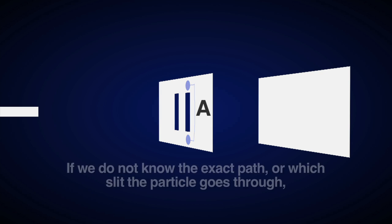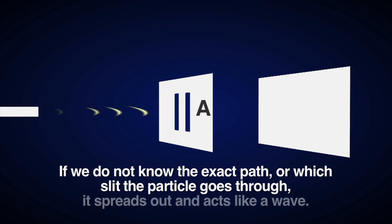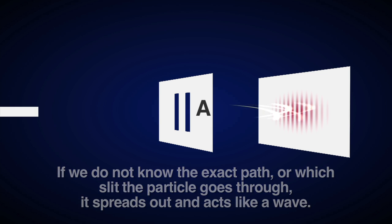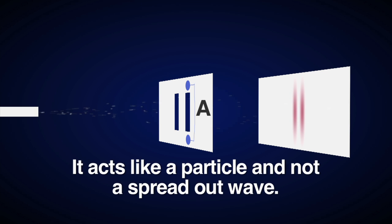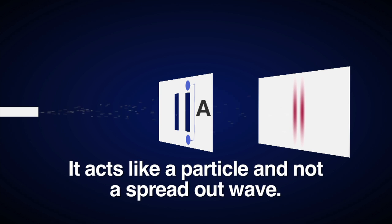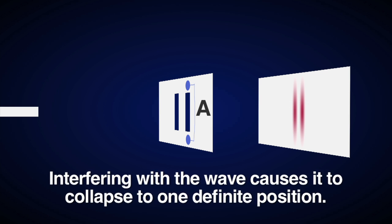So basically, if we don't know the exact path or which slit the particle goes through, it spreads out and acts like a wave. But if we place a measuring device at one slit and find out which slit it goes through, then since we know the exact path it took, it acts like a particle instead of a spread out wave. Now, some say the measuring device is just interacting and causing the particle to collapse from a wave into a particle, and thus collapse is just caused by interaction. Interfering with the wave causes it to collapse to one definite position.